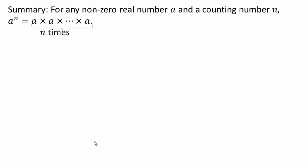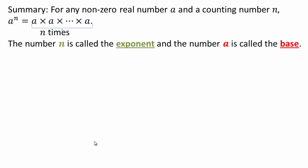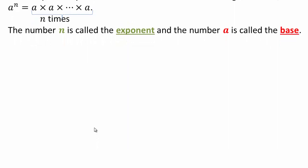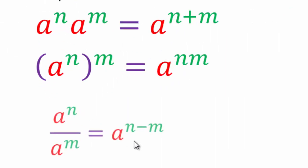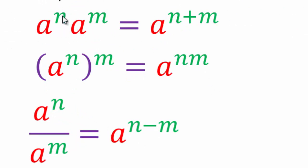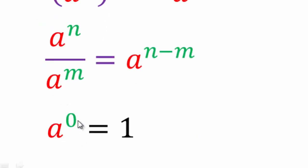Our summary for all the exponent stuff we've done so far: for any real number a and counting number n, a to the power n means multiply a n times. a is called the base, n is called the exponent. When you multiply same base to an exponent and same base to exponent, you add the exponents. If you have base to exponent raised to a power, you multiply the exponents. Division of base to exponents means you subtract the exponents. And base to the zero power is always one.